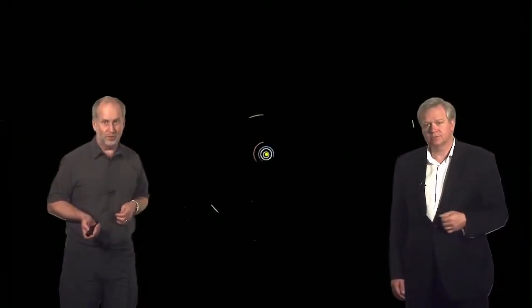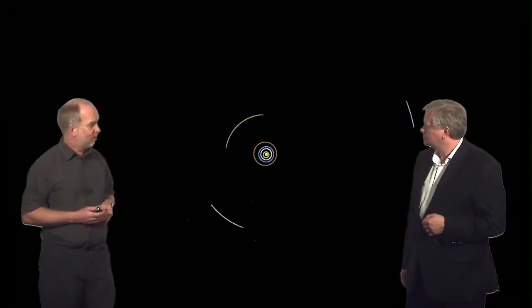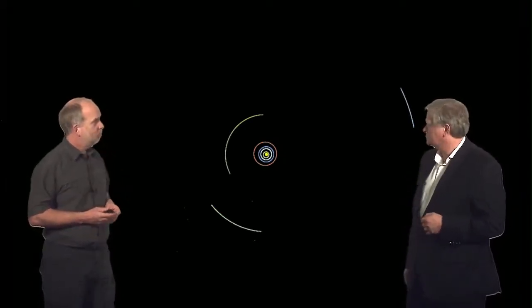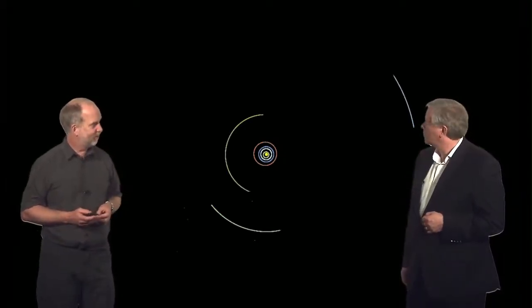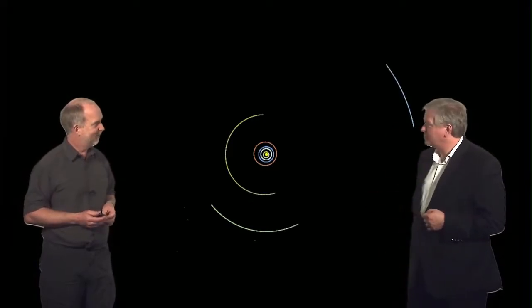If you look at the outer solar system, once again, you're seeing the same sort of pattern. Things are going around in the same direction, pretty much in circular orbits. We're not going to wait here for Neptune to finish, are we? No.